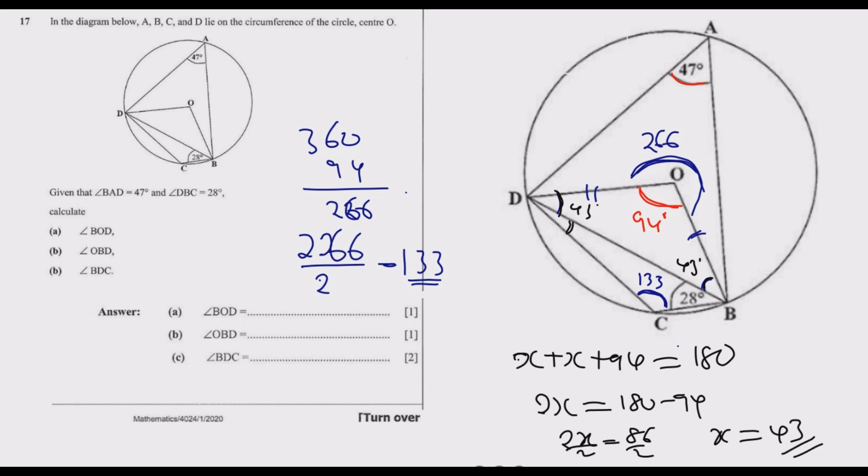We can also find this angle because these three angles should add up to 180. We know that it's 133 plus 28 plus that angle, which we'll call y, which is angle BDC, must equal 180. When you sum 133 plus 28, we get 161. So 161 plus y is equal to 180. Therefore y is equal to 180 minus 161, which is 19 degrees.